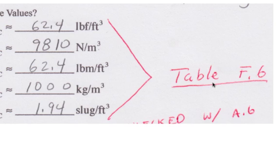All these values are listed in table F.6 in the inside front cover of your text. So, over time, commit these to memory. But while you're doing that, here's a handy place to check.